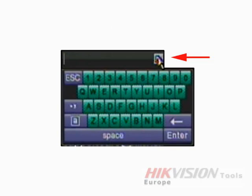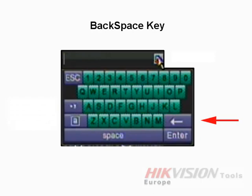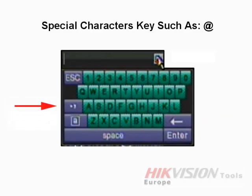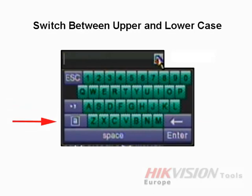The left-pointed arrow on this keyboard is for backspace in order to remove characters. The comma key is to use special characters such as the at sign. The A key is to switch between upper and lower case alpha characters.